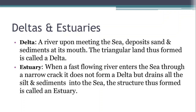Delta: A river upon meeting the sea deposits sand and sediments at its mouth. This triangular land thus formed is called a delta. Estuaries: When a fast-flowing river enters the sea through a crack, it does not form a delta but drains all the silt and sediment into the sea. The structure thus formed is called an estuary.